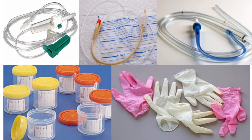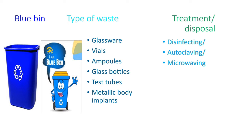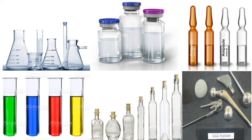The third type is the blue bin. Waste discarded here includes glass items — vials, ampoules, glass bottles, test tubes — and metallic body implants. The disposal method for the blue bin is disinfection, autoclaving, or microwaving.